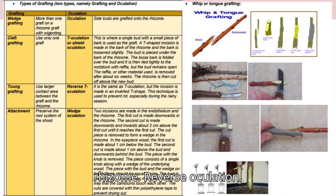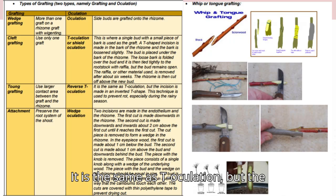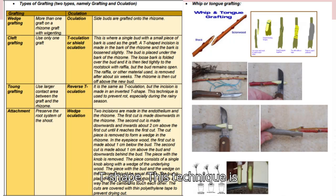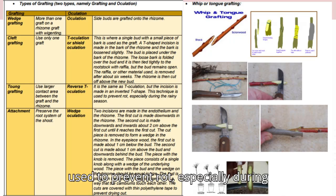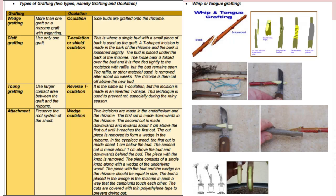Reverse T-oculation: it is the same as T-oculation but the incision is made in an inverted T-shape. This technique is used to prevent rot, especially during the rainy season.